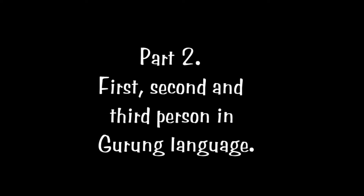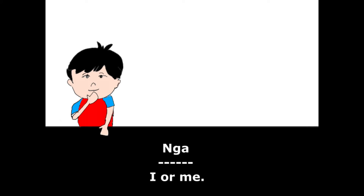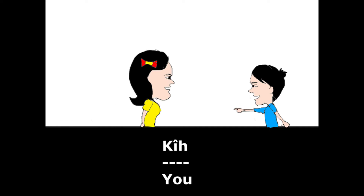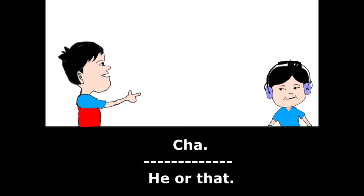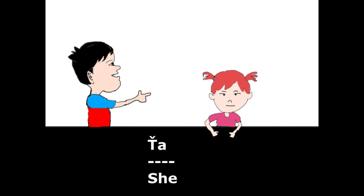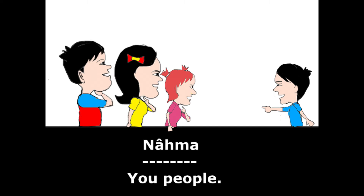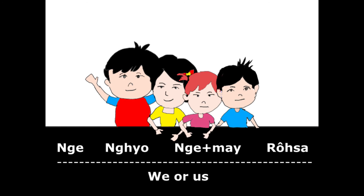First, Second, and Third Person in Gurung Language: Ng, Ki, Ta. Ta. Nama. Ni. Nyo. Nime.